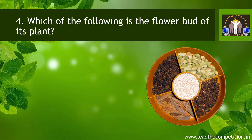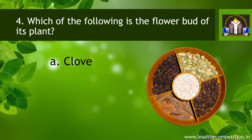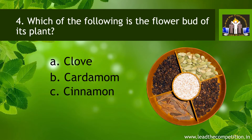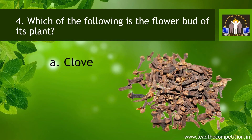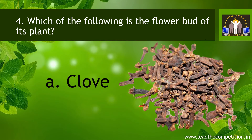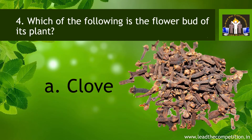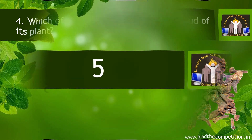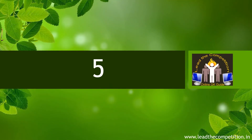Question number 4. Which of the following is the flower bud of its plant? A. Clove. B. Cardamom. C. Cinnamon. D. Garlic. The correct answer is A. Clove.